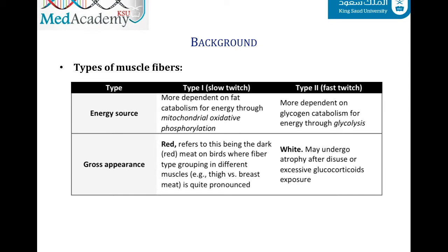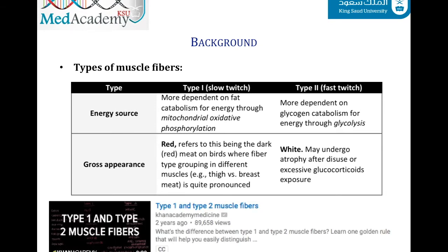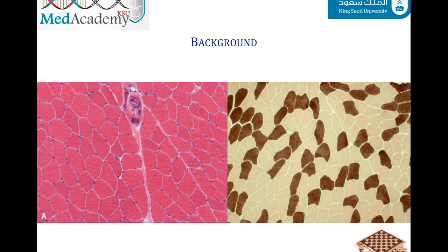Skeletal muscle consists of different fiber types, broadly classified as slow-twitch aerobic type 1 and fast-twitch anaerobic type 2. Type 1 and type 2 fibers are normally distributed in a checkerboard pattern. Type 1 fibers stain more lightly than type 2 fibers in ATPase stain, appearing whiter under the microscope, but on gross appearance type 1 appears red and type 2 appears white.